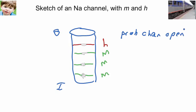It's the product of these probabilities. h, for that channel, times m cubed, m cubed being because there are three m channels. So, in other words, it's equal to h times m times m times m.